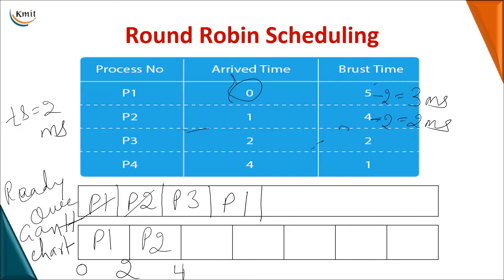At the 4th millisecond, P4 has arrived and is added to the ready queue, and P2 is also added back since it still needs time. The process at the front is P3. P3 executes for 2 milliseconds — time becomes 6 — and since P3 has completed its execution, it is removed from the ready queue and not added back.